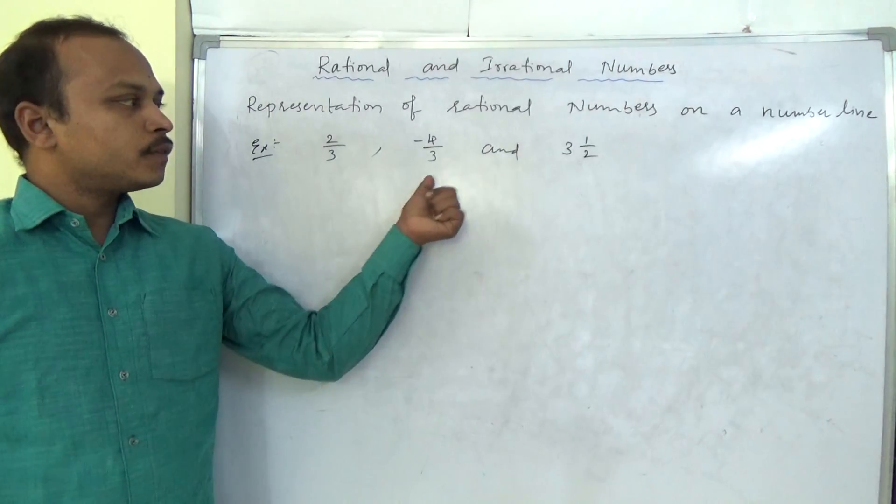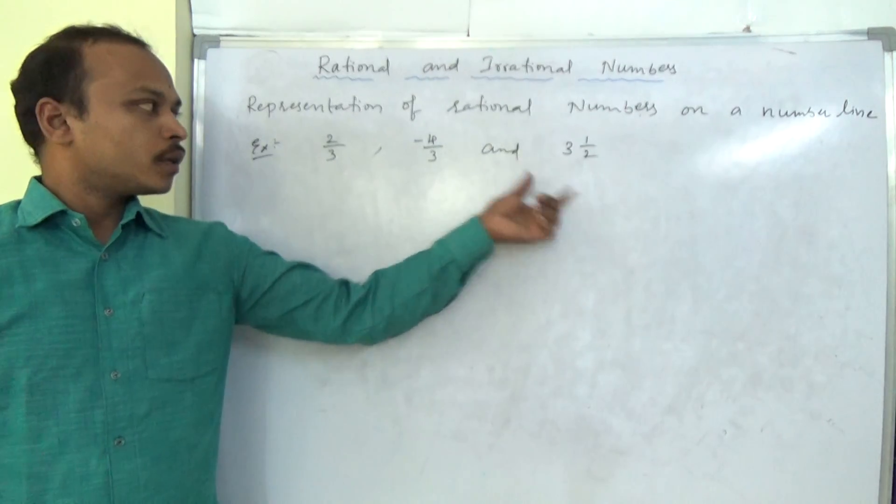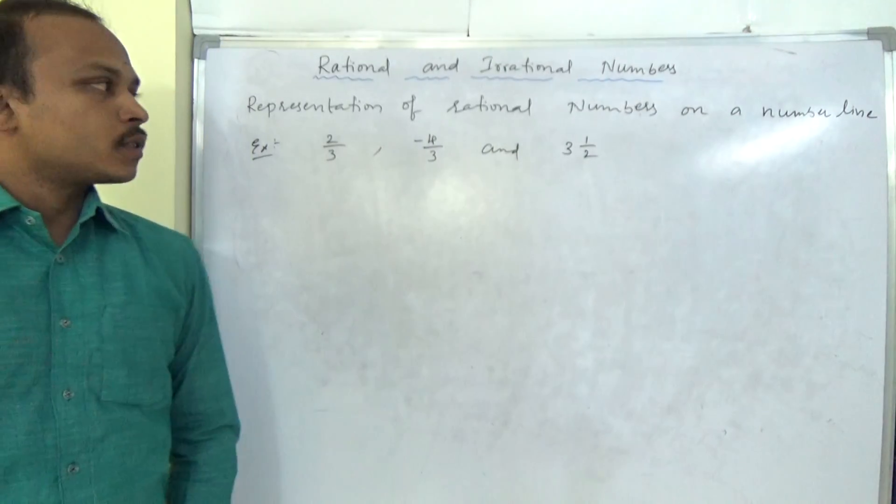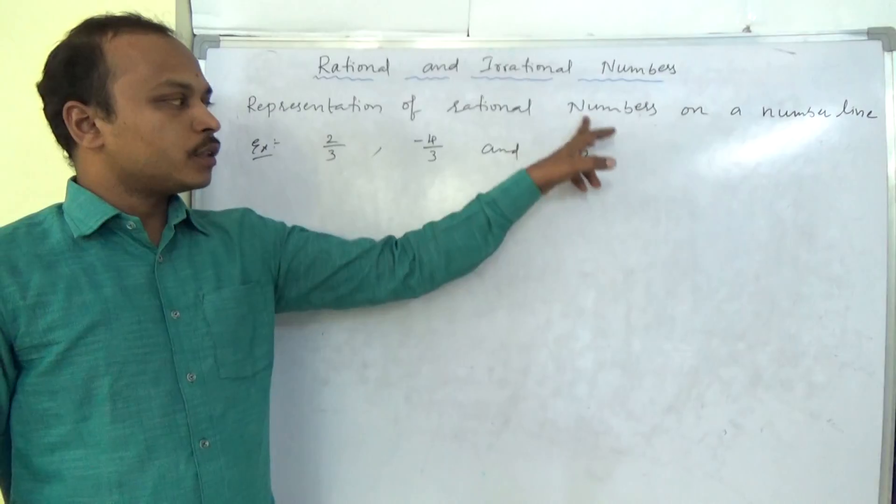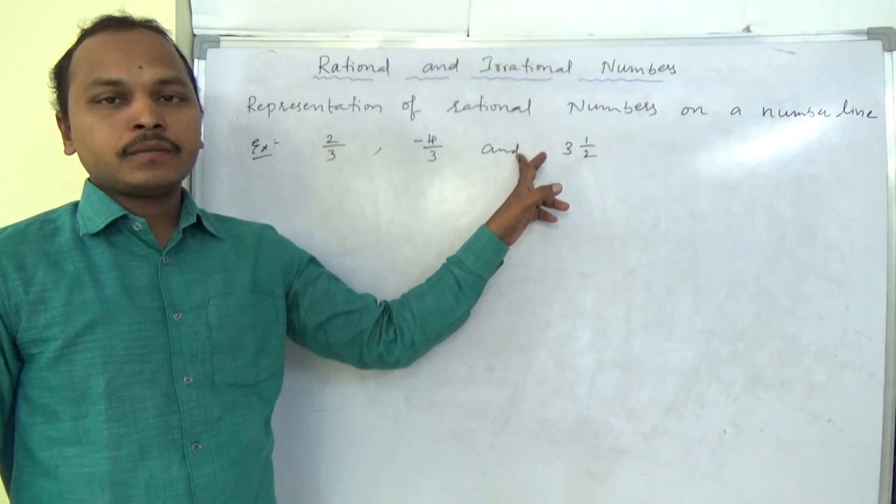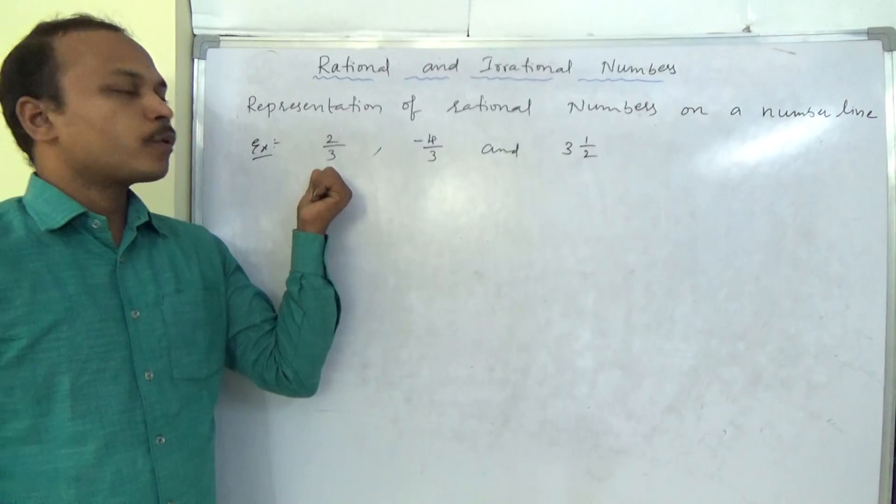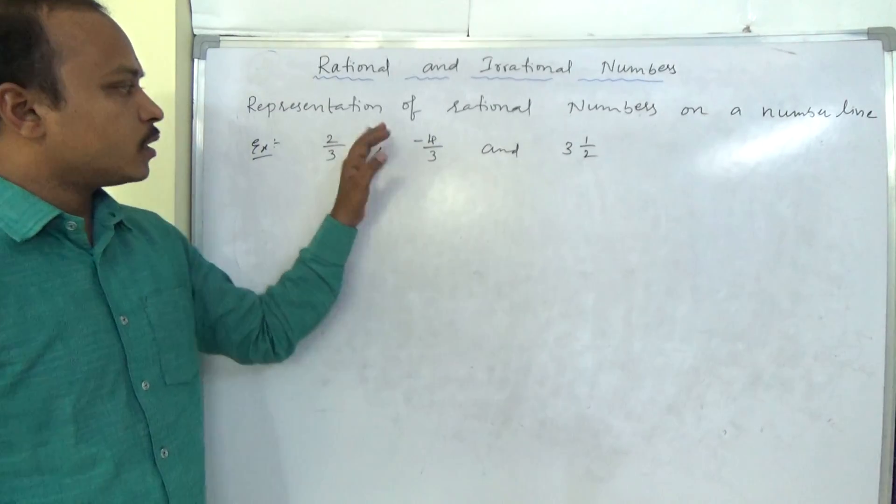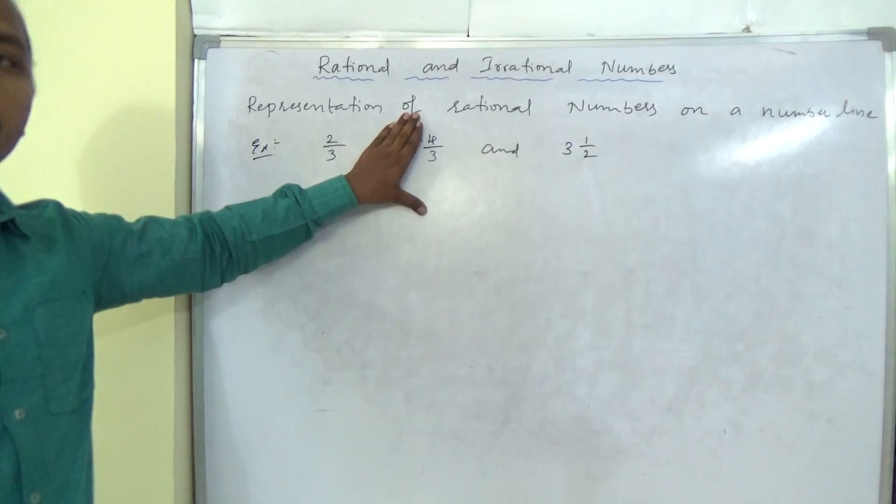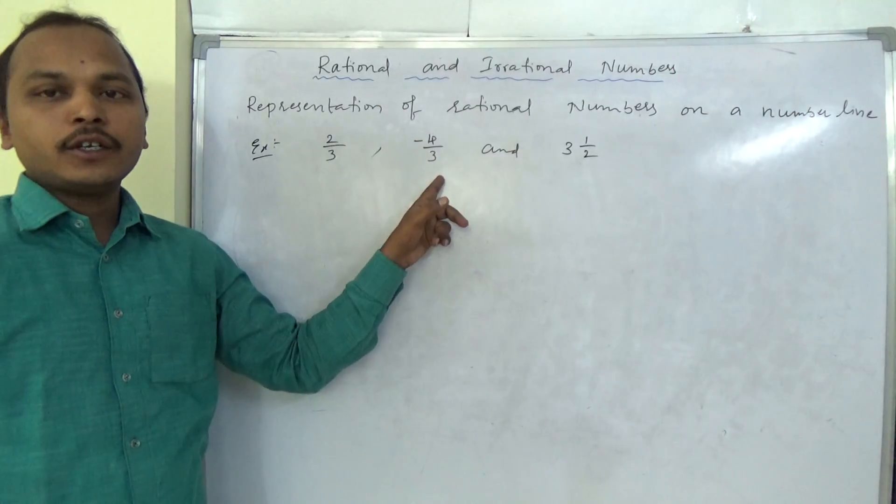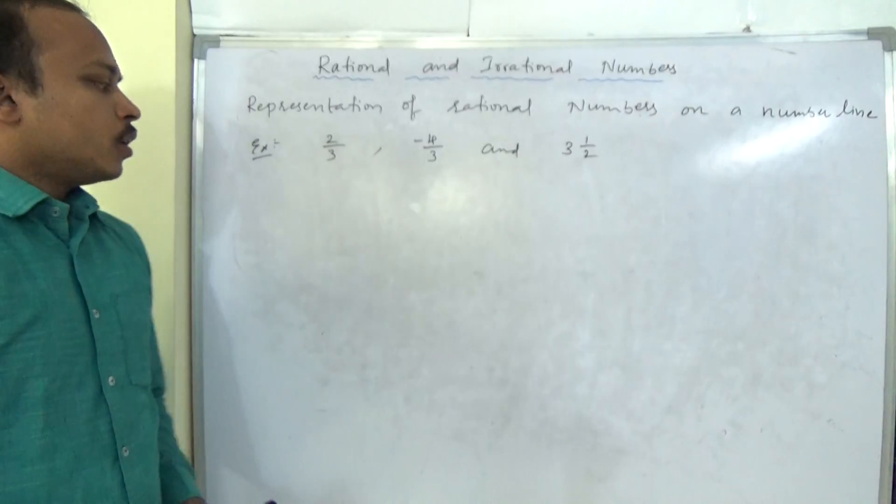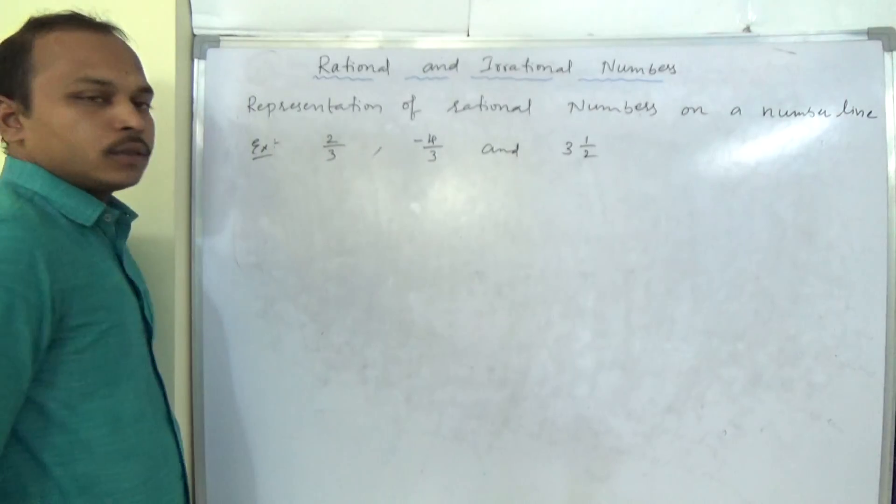Now, these three are the rational numbers because numerator and denominator, p by q form. Previous topic we discussed. 3, 1 by 2, this is in the form of mixed fraction. This is proper fraction. This is negative improper fraction. Because minus if you take out 4 by 3, numerator is bigger than denominator because negative signs apart, 4 by 3.